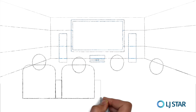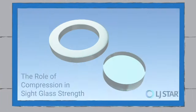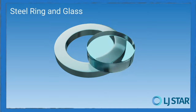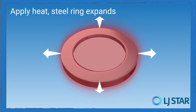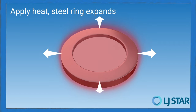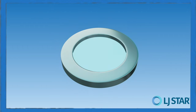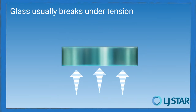Now that you understand the differences between borosilicate, soda lime, and other pseudo-boro copies, let's talk about the fused nature of a sight glass — how the glass fuses with the metal site ring material around the window. You need to think about the difference between tensile strength and compressive strength. When you apply heat, the steel ring expands; at the same time the glass melts and fuses with the steel. Then as the steel cools, it contracts and compresses the glass, making it even stronger.